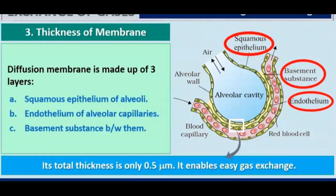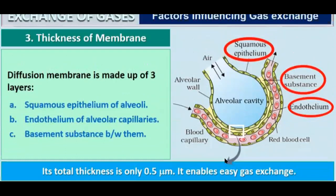The next factor is the thickness of the diffusion membrane. The diffusion membrane is made up of three layers: squamous epithelium of the alveoli, endothelium of alveolar capillaries, and the basement substance between them. The total thickness is 0.5 micrometers, and it enables easy gaseous exchange between the various parts of the membrane.